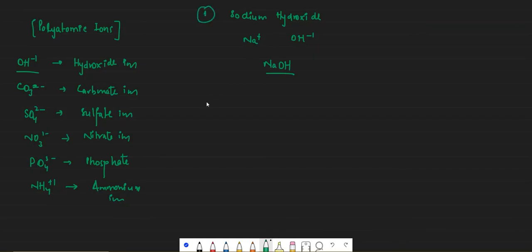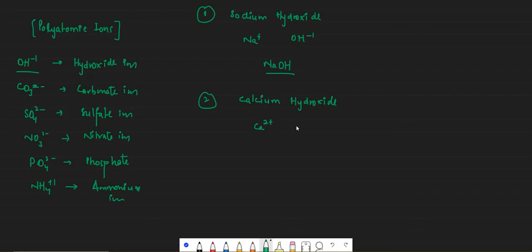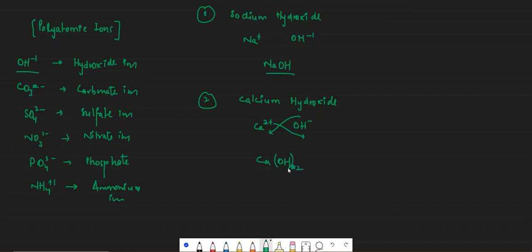Now let's do calcium hydroxide. Calcium is Ca 2+ and hydroxide is OH minus 1. So 2 goes here and 1 goes here. But you cannot just write Ca(OH) without brackets, because the 2 must be multiplied with the whole OH ion. If you write it without brackets, it looks like 2 is only multiplying hydrogen. So there has to be a bracket: Ca(OH)2, meaning the 2 is multiplied with both oxygen and hydrogen.